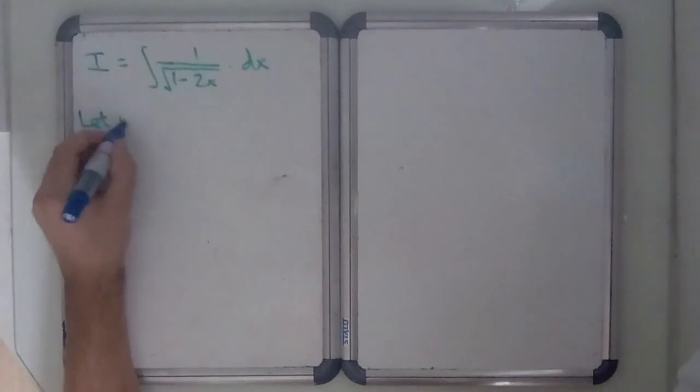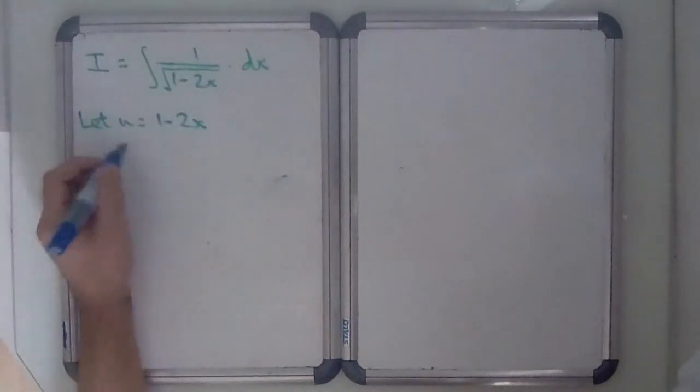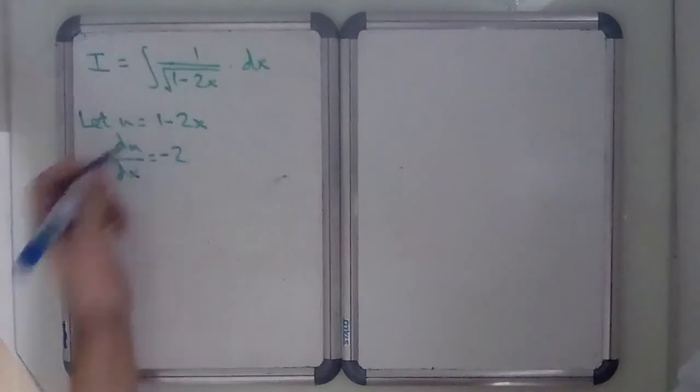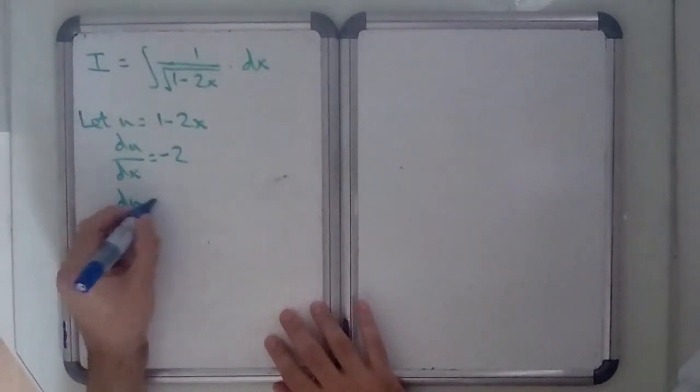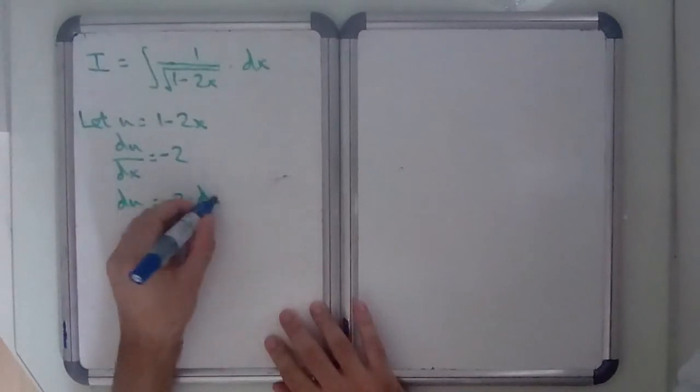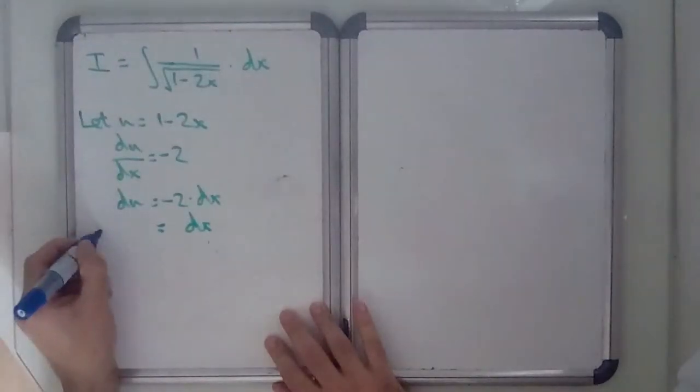So I'm going to say let u equal 1 minus 2x. Differentiate with respect to x, so du by dx is going to be minus 2. Make dx the subject, so du equals minus 2 dx, and that means dx equals du divided by minus 2, which is the same as minus 1 half du.